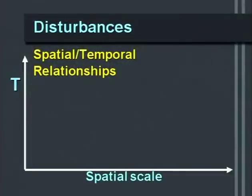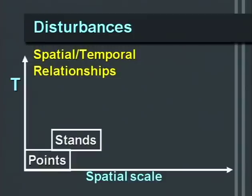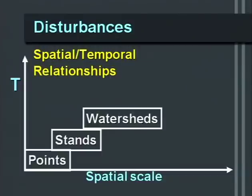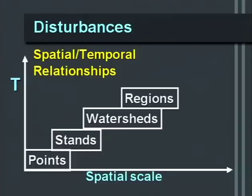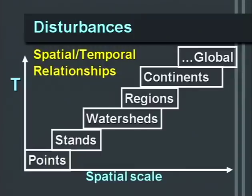On a graph with time on the y-axis and spatial scale on the x-axis, a small pebble in a creek may be turned over on a daily basis. Stands may be influenced every two to ten years by fire or flood. Entire watersheds may be affected by large-scale disturbances. Regions may be influenced by huge but very long return events like volcanoes. At continental scales, we might see severe ice age events with very long time scales and large spatial influences.